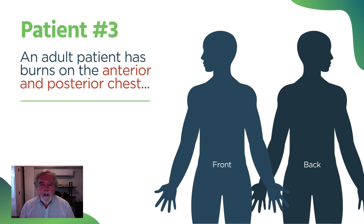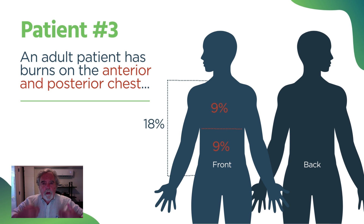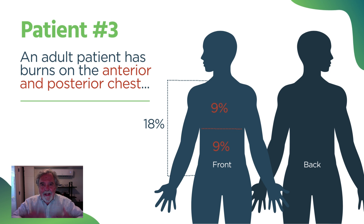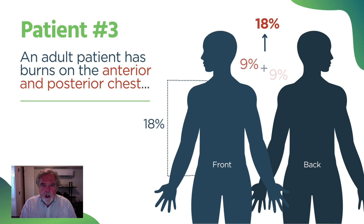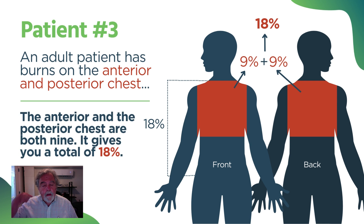Patient number three: an adult patient has burns on the anterior and posterior chest. Anterior and posterior are other refining words we might find. A burn to the anterior left leg would also be 9% because that implies half. In this case, we're talking about the anterior and posterior chest. Remember, the torso itself — the front is 18% and the back is 18%. But the chest is half of the torso and the abdomen is the other half, so that 18 breaks down into nine and nine. The anterior chest is nine and the posterior chest is also nine, giving a total of 18%.